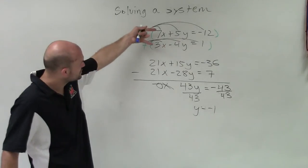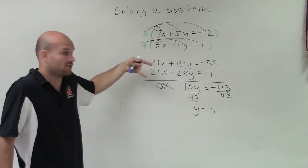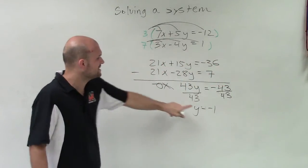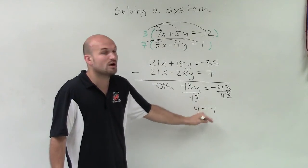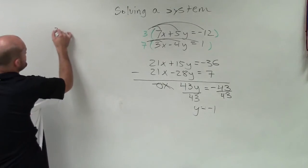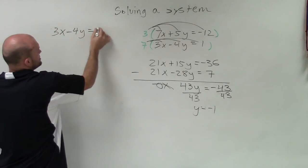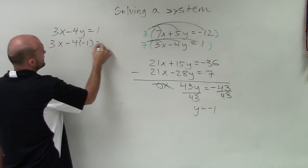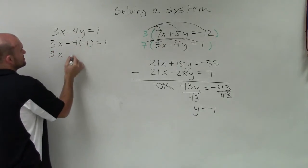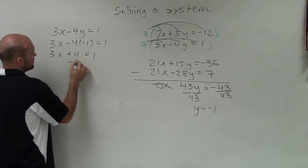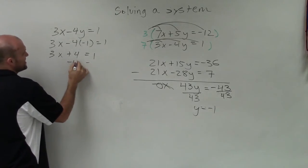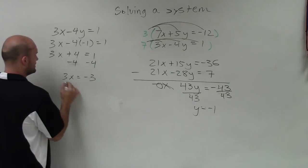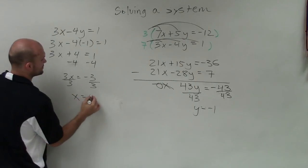Now that I know y equals negative 1, I need to find the value of x. I can choose either of the two equations — I'll go back to the originals since the equivalent equations have much higher numbers. I'll choose the second equation because the numbers seem a little bit easier to work with. So I have 3x minus 4 times negative 1 equals 1. Negative 4 times negative 1 is positive 4, so 3x plus 4 equals 1. Subtracting 4 from both sides, I get 3x equals negative 3. Divide by 3, and x equals negative 1.